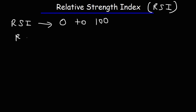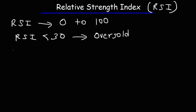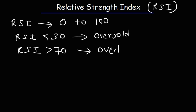When the RSI indicator is less than 30, this typically means that the stock is oversold. If the RSI value is above 70, this typically indicates that the stock is overbought.